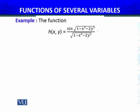The function is in front of you. h(x,y) is defined by sin(√(1-x²-2y²)) divided by (1-x²-2y²). If I have this function u(x,y) defined by √(1-x²-2y²), then my function h(x,y) reduces to sin(u) over u.